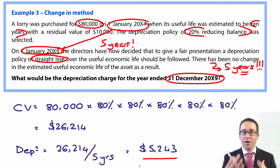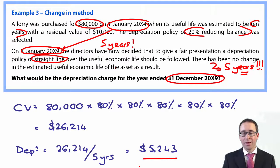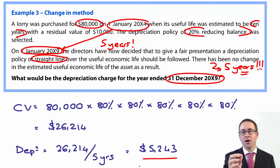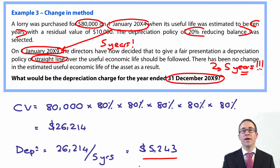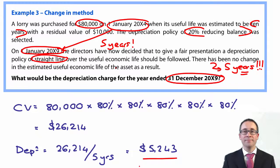The hardest part of these questions, aside from the reducing balance calculation itself, is counting the years correctly. Dates are crucial — a mistake on the date means you get the question wrong. Read questions carefully and don't be embarrassed to count on your fingers. In the next session, we'll look at the revaluation model — another area of revision with added complexity from the certificate level.